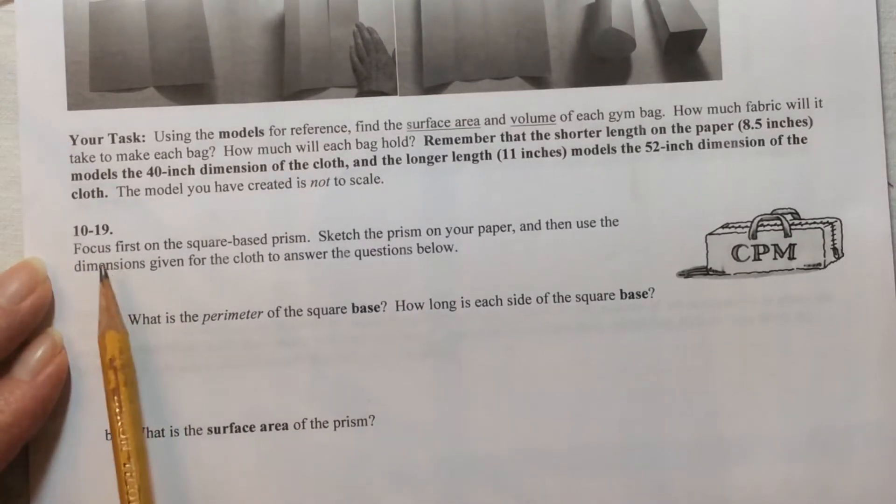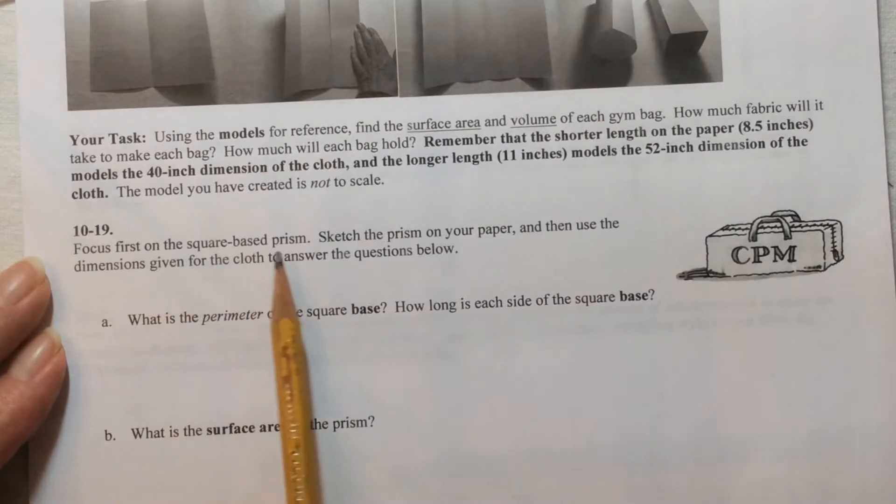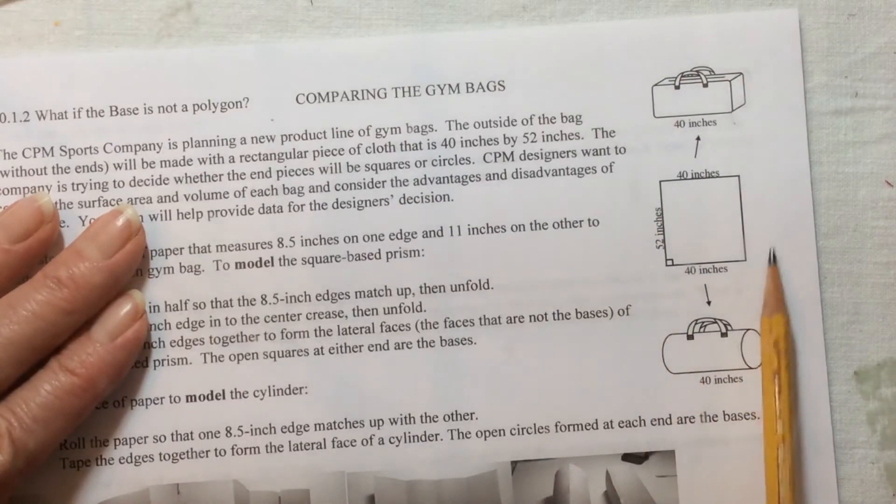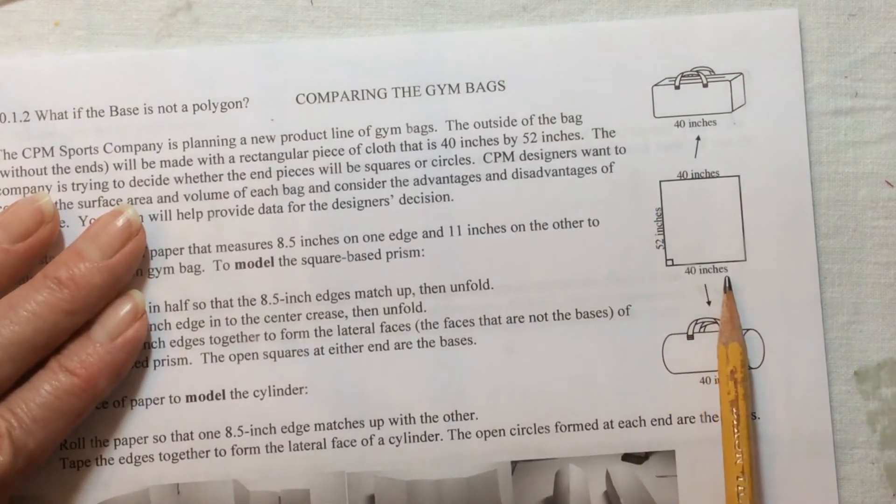Problem 10-19. Focus first on the square-based prism. Sketch the prism on your paper, then use the dimensions given for the cloth to answer the questions below. The dimensions given for the cloth are these dimensions.